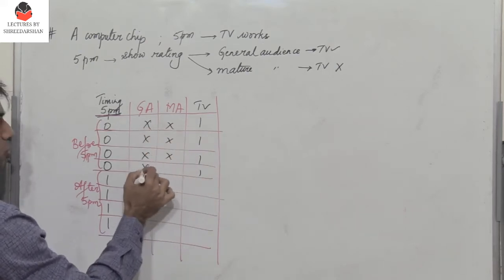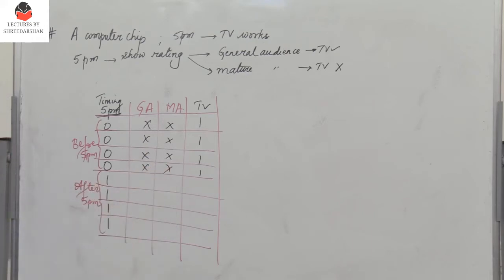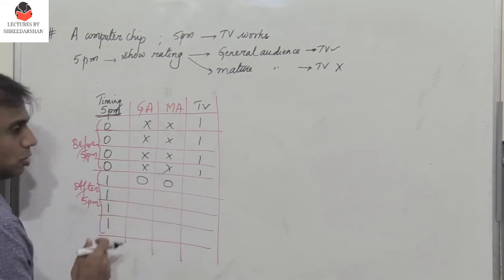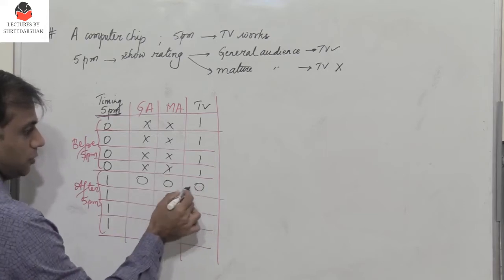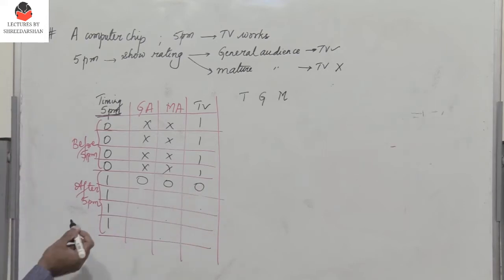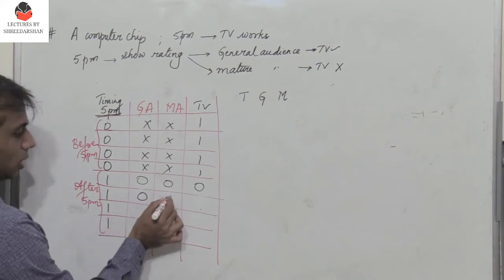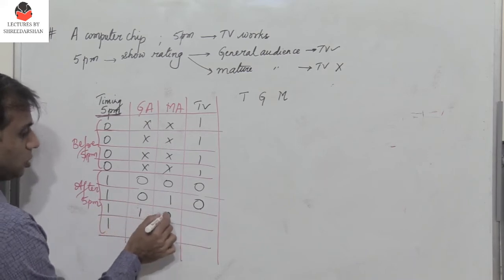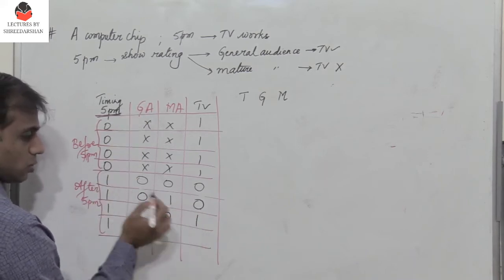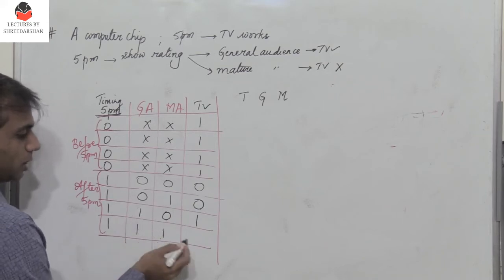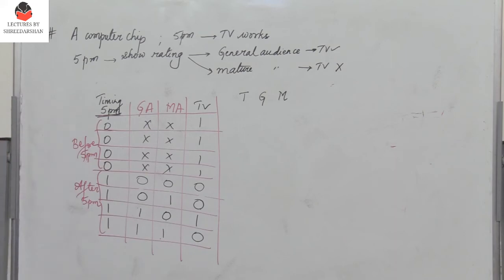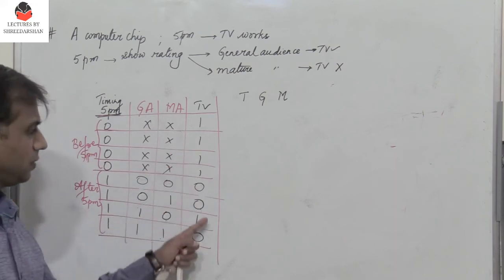But after 5 p.m. we are very particular. If both of them are zero, that means there is no show, of course the TV is off - nothing is being shown. If it is zero and one, that means mature audience, it is zero. If it is one zero, that means this is for general audience, so it is one. And if both of them are one, the output is zero. So if you have a show for the mature audience, the output is zero.